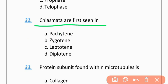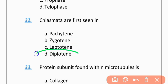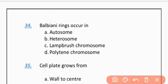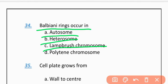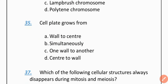MCQ 32: Chiasmata are first seen in — Pachytene, Zygotene, Leptotene, or Diplotene. The correct option is D — Diplotene. MCQ 33: Bulbous rings occurring on which chromosome type — Autosomes, Metrochromosomes, Lampbrush chromosomes, or Polytene chromosomes. The correct option is D — Polytene chromosomes.